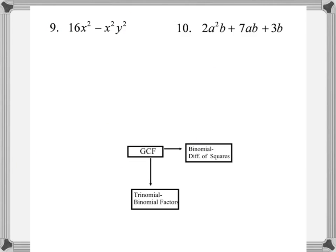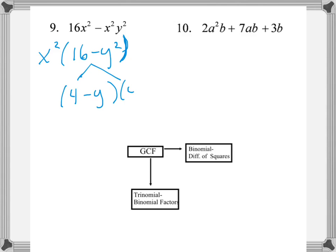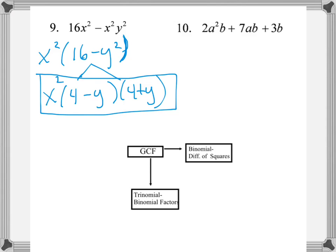You might want to pause the video to try some of these on your own. For number 9, the GCF is x², so we factor that out. The binomial left over, 16 minus y², is itself a difference of squares, so it factors into (4 − y)(4 + y), giving x²(4 − y)(4 + y). Note that we don't write x² as x times x — when the GCF has a squared term, we don't break that down; it's really the binomial or trinomial we want to factor further.